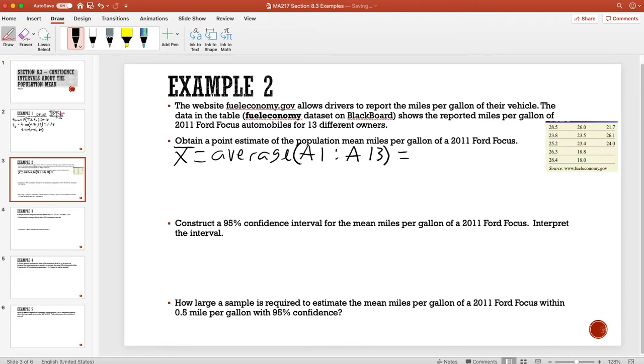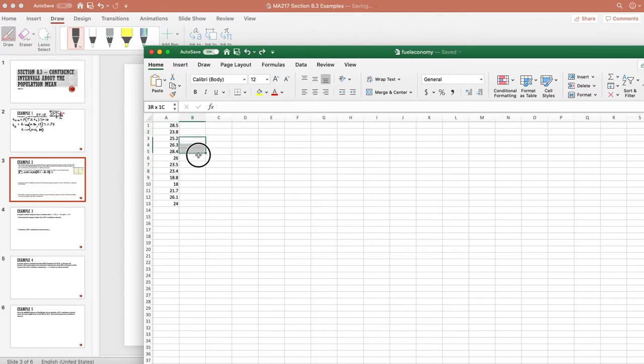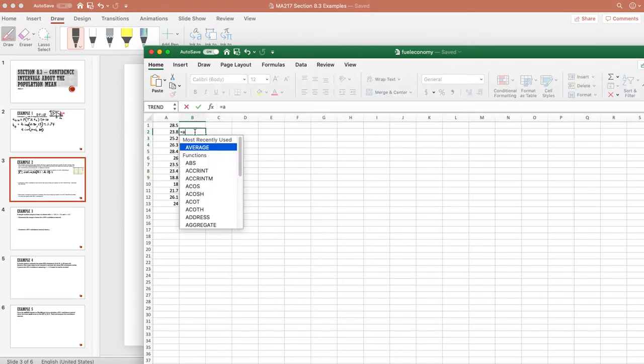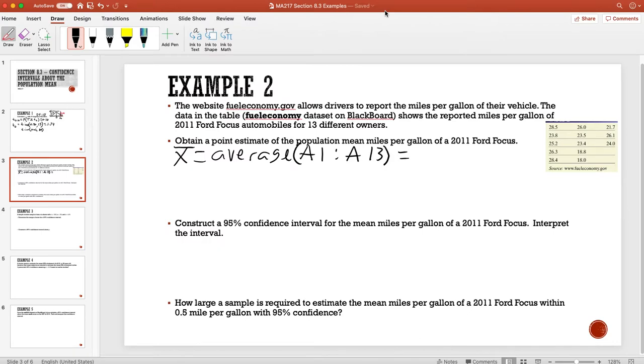Doing that inside of Excel, we would do equals average of A1 through A13. This gives us an average of about 24.1308 miles per gallon.